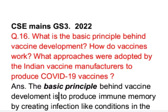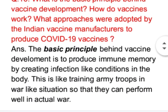This is question number 16 from GS Paper 3 of Mains 2022 examination. This question has three parts: first, what is the basic principle behind vaccine development; second, how do vaccines work; and third, what approaches were adopted by the Indian vaccine manufacturers to produce COVID-19 vaccines. We will start the answer with the basic principle behind vaccine development.